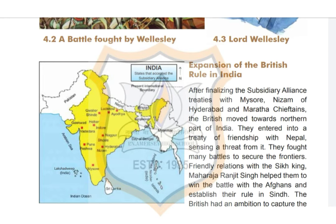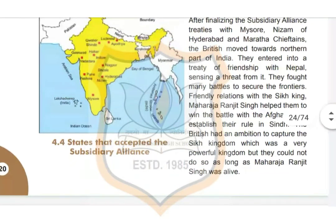After finalizing the Subsidiary Alliance treaties with Mysore, the Nizam of Hyderabad, and the Maratha chieftains, the British moved towards the northern part of India. They entered into a treaty of friendship with Nepal, and sensing threats, fought many battles to secure their frontiers. Friendly relations with the Sikh king Maharaja Ranjit Singh helped them win battles with the Afghans and establish their rule in Sindh. The British had an ambition to capture the Sikh kingdom, which was very powerful, but they could not do so as long as Maharaja Ranjit Singh was alive.